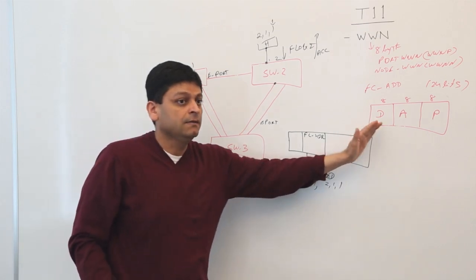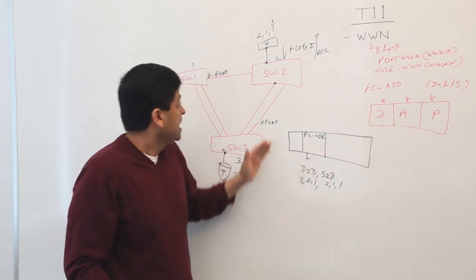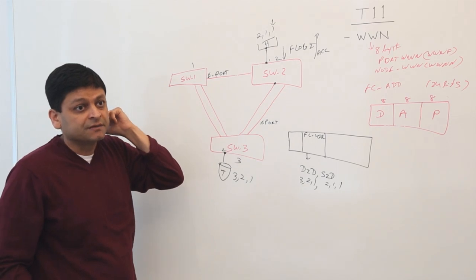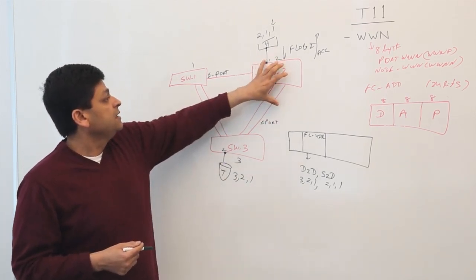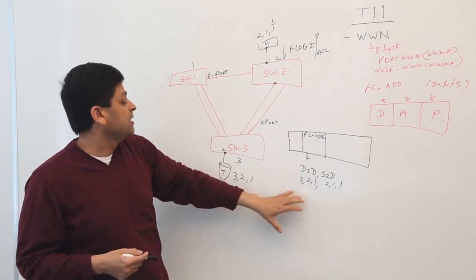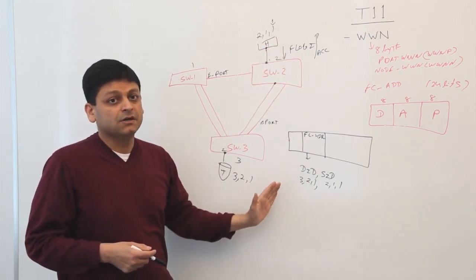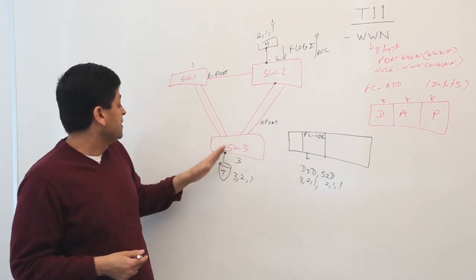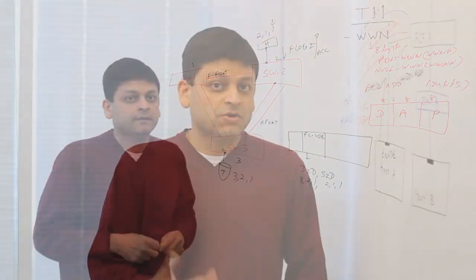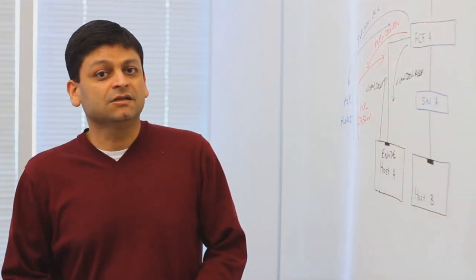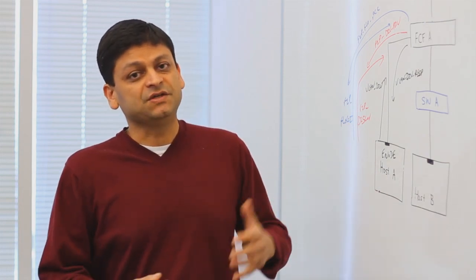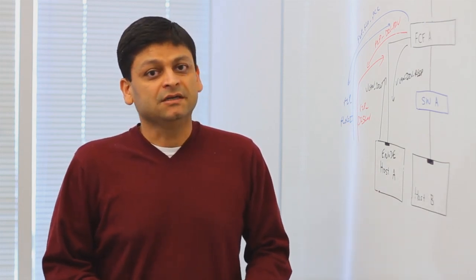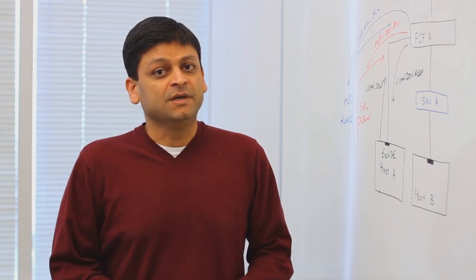And this is where having the hierarchical FC addresses helps in doing this switching. You're only comparing, in the external switches, you're only comparing a byte or a domain, and then you are going out to the port. So thank you for watching the technology series. Hopefully you got a good overview of Fiber Channel and FCoE. Stay tuned for more technology presentations from us.